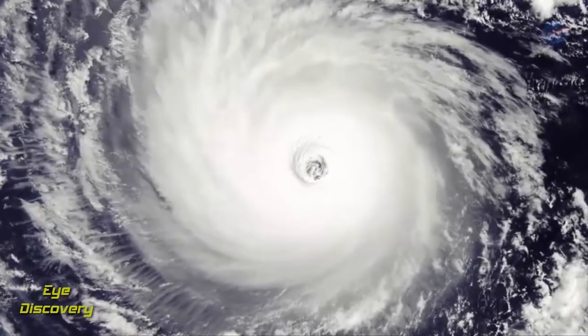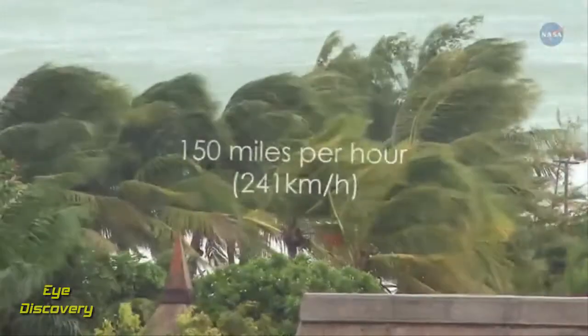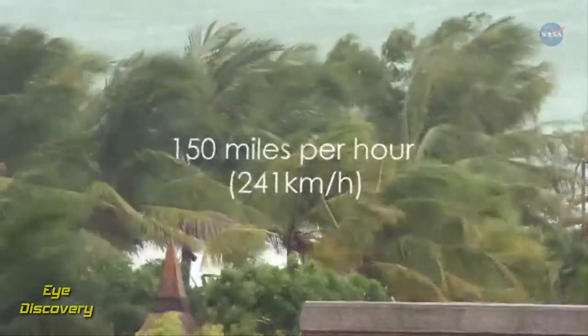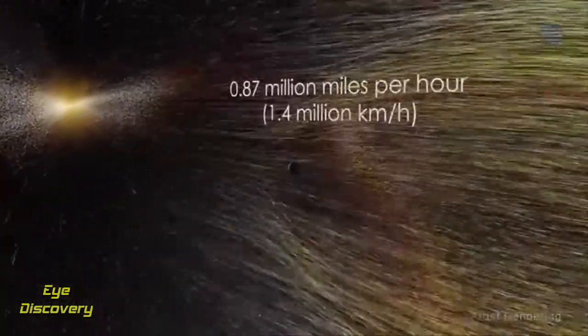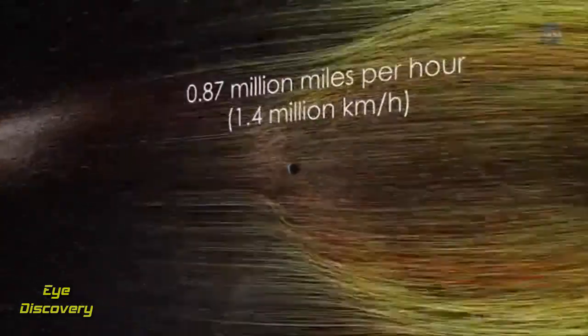The wind speed of a devastating Category 5 hurricane can top over 150 miles per hour, or 241 kilometers per hour. Now, imagine another kind of wind with an average speed of 0.87 million miles per hour, or 1.4 million kilometers per hour.